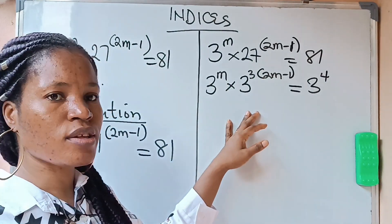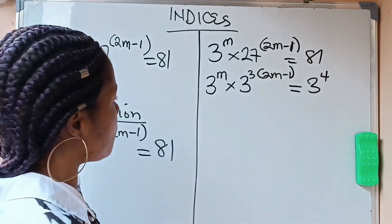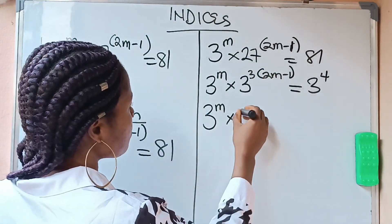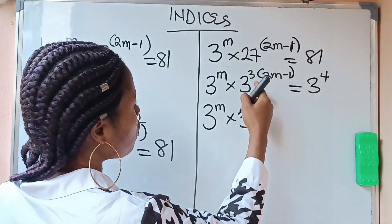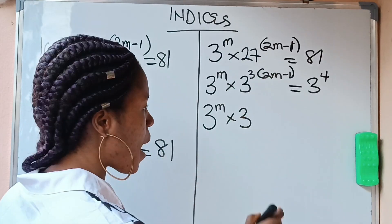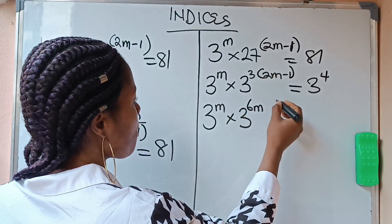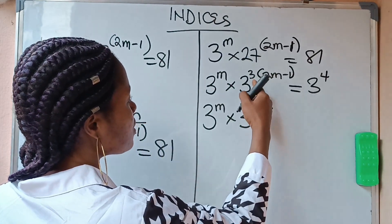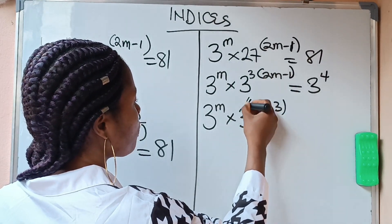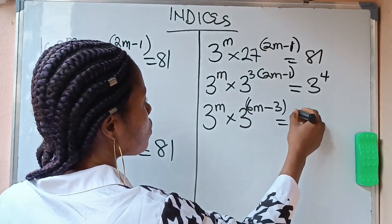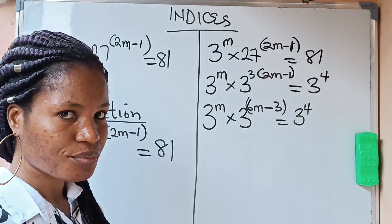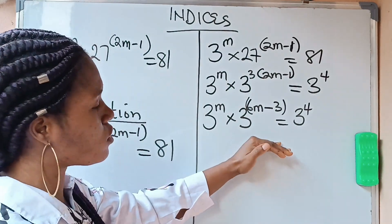Now we expand. We have 3 raised to the power of m, times 3 raised to the power of 3 times (2m minus 1). That gives us 6m minus 3. So we have 3^m times 3^(6m minus 3), equal to 3 raised to the power of 4.